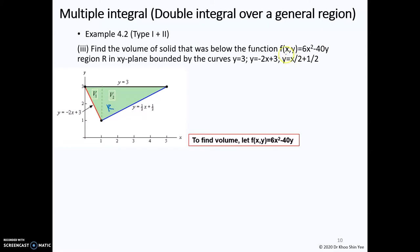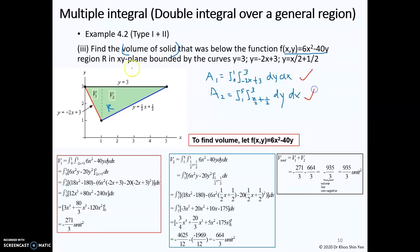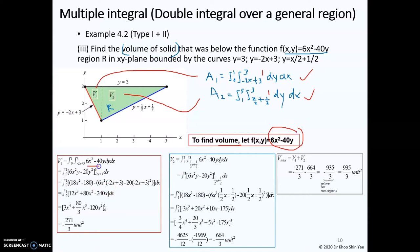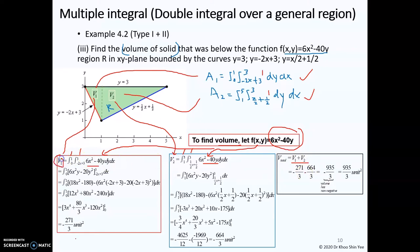For the same region, the height function is given, and we are going to find the volume. The limits for region 1 and region 2 remain the same, but instead of using height function equal to 1, we use the height function equal to 6x squared minus 41. The total volume is the summation of V1 and V2. Since volume should not have a negative value, we remove the negative sign from the final answer.